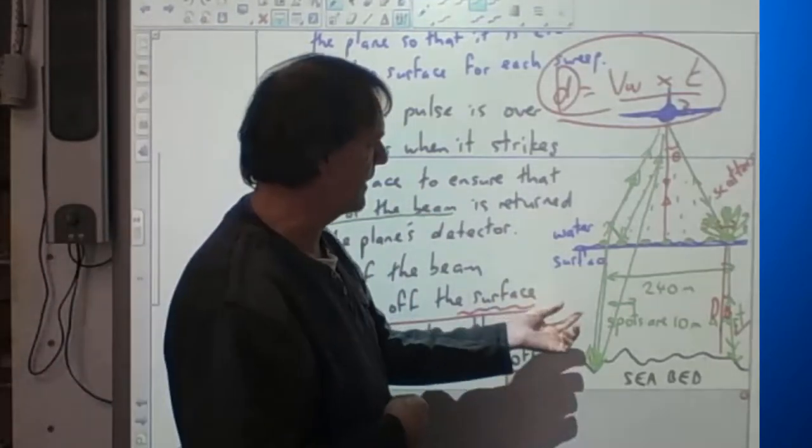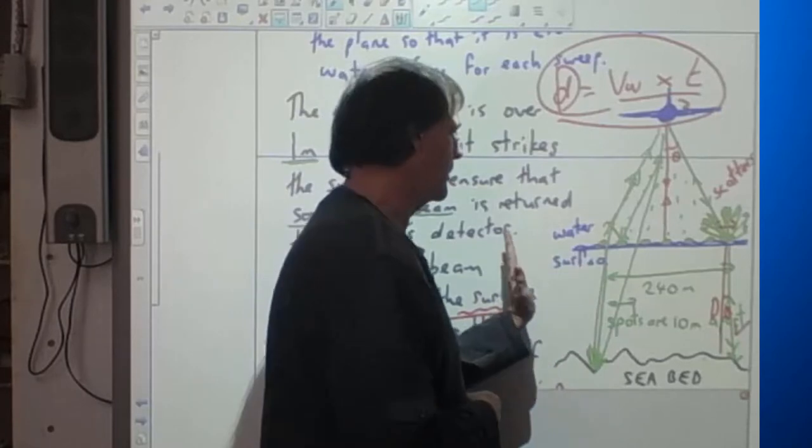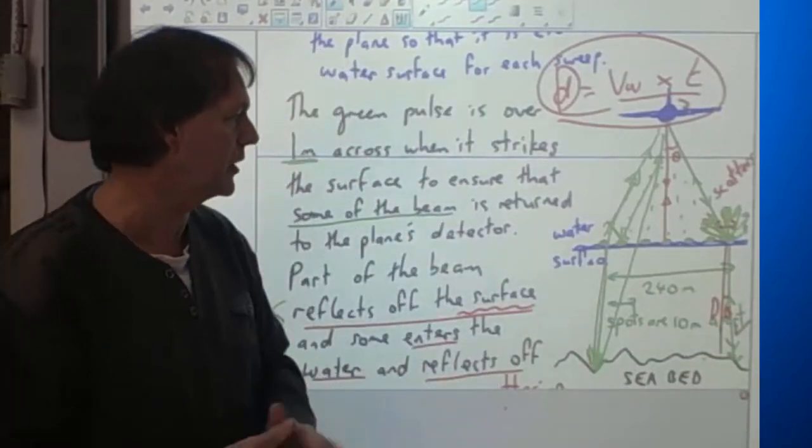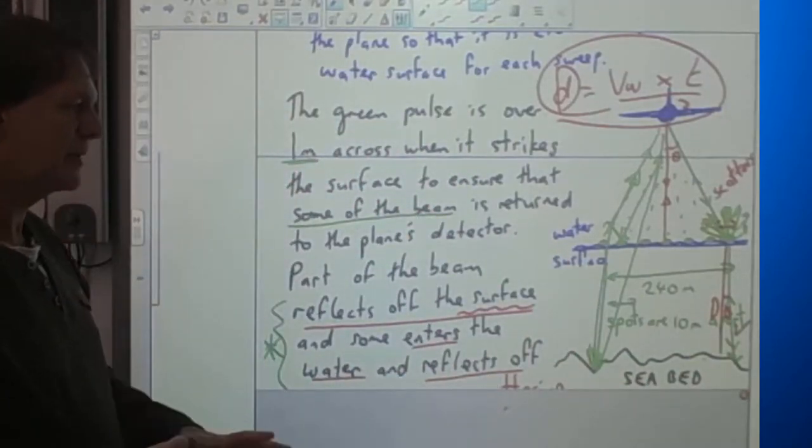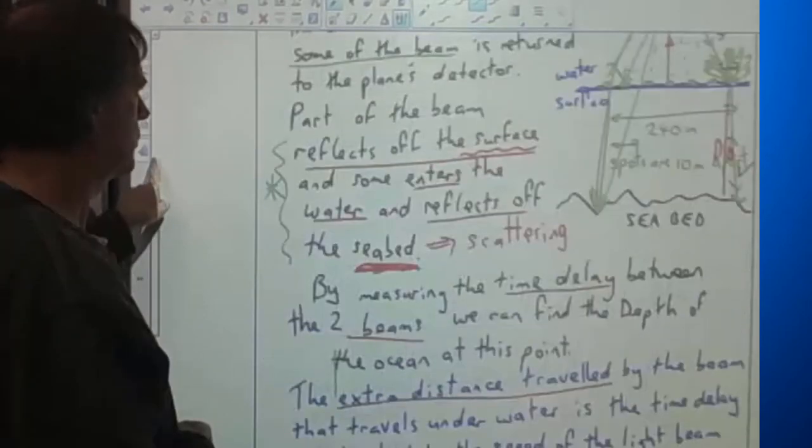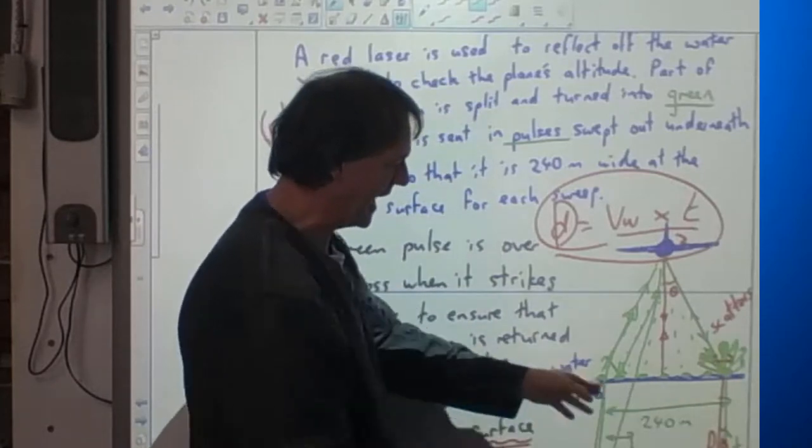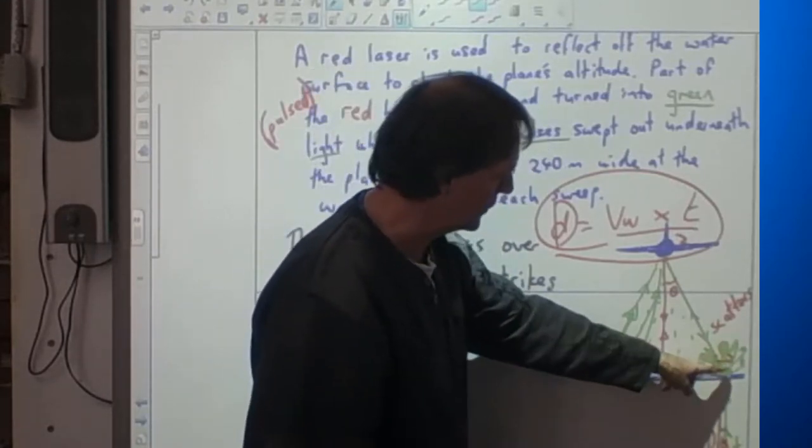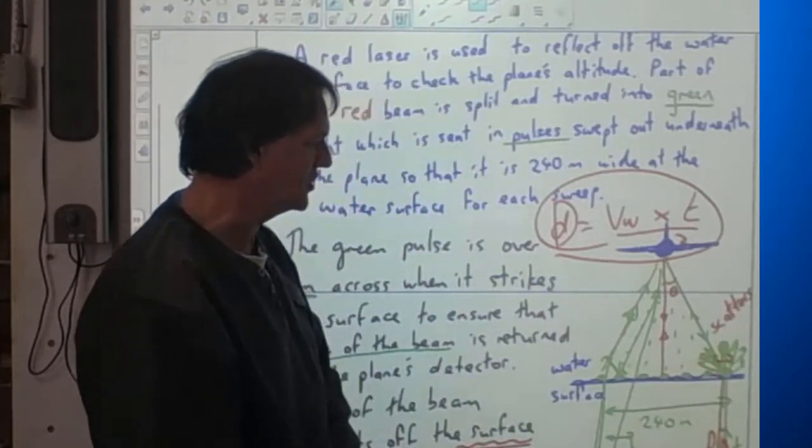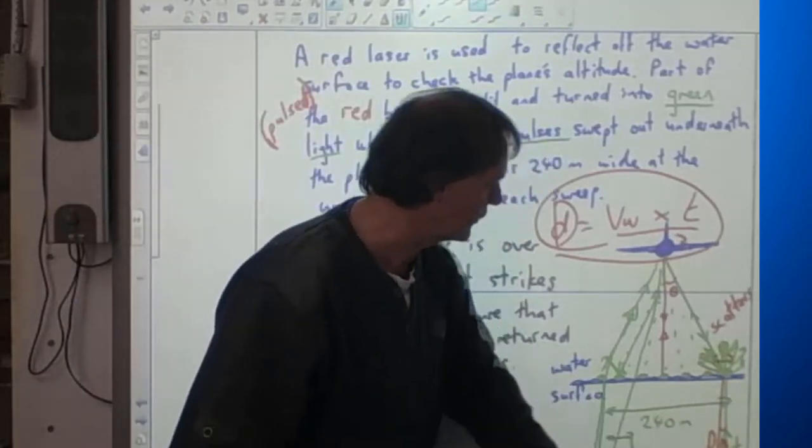The spots are roughly about 10 metres apart and it sweeps out over 240 metres. So it's a big path you're doing in one go, and you get a depth for each of those sections of the seabed. It requires a very intense beam because you're getting it spreading over a metre and you're getting it scattering on the surface of the water, losing energy where it's scattered in all directions.